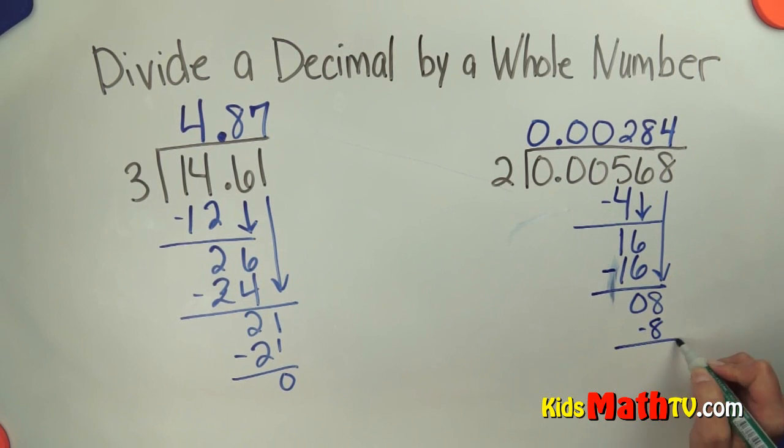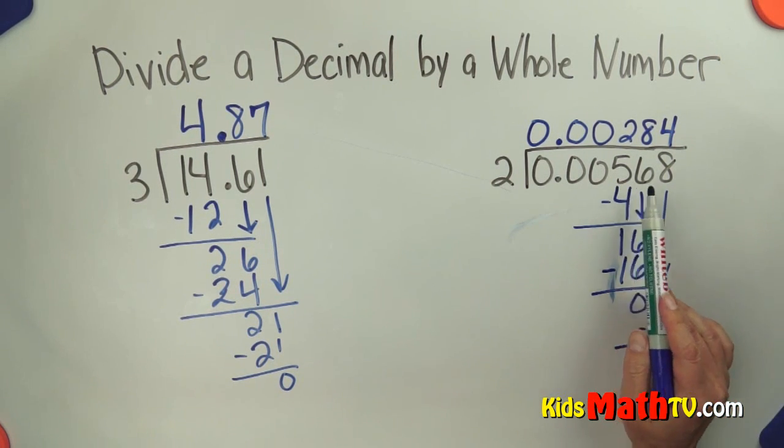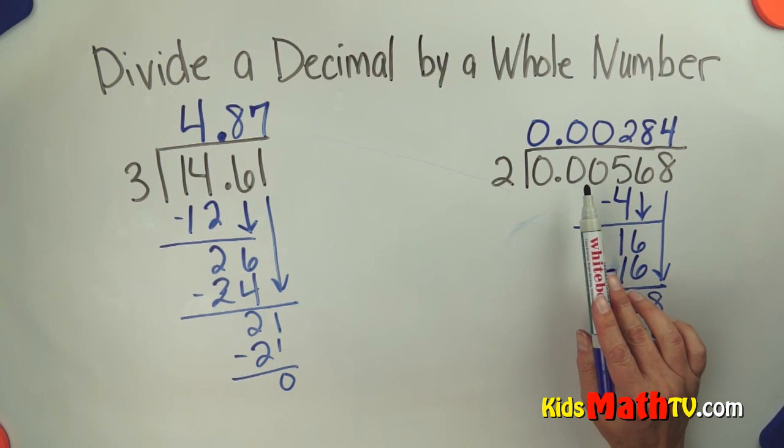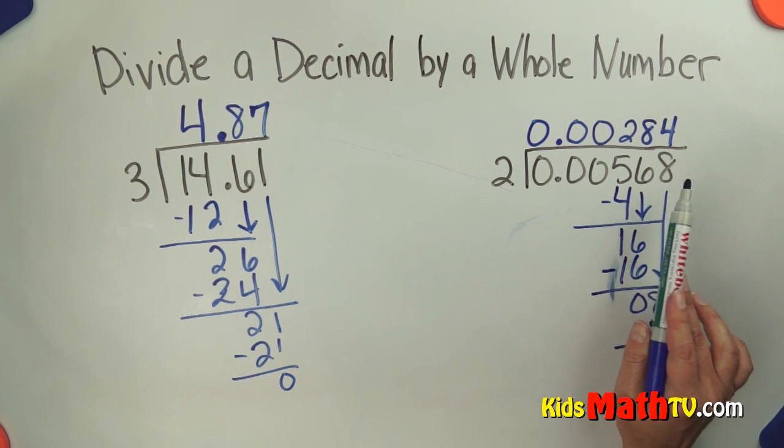So 568 in the tens, hundreds, thousands, ten thousands, hundred thousands—568 hundred thousandths divided by 2 is 284 hundred thousandths.